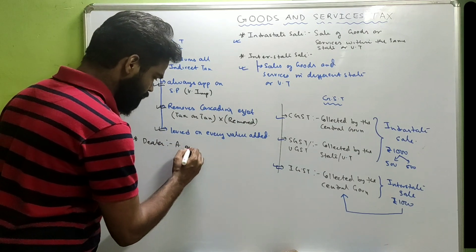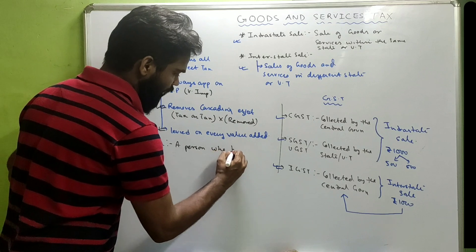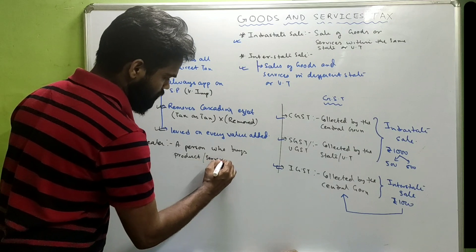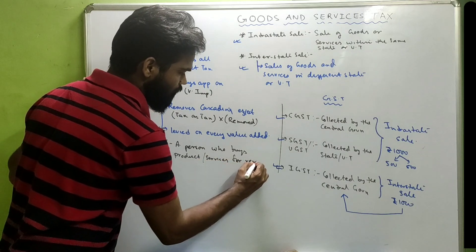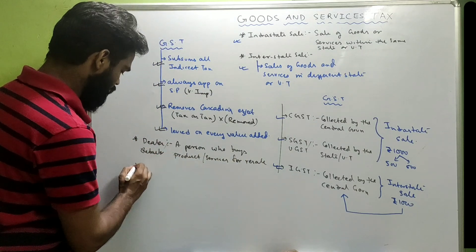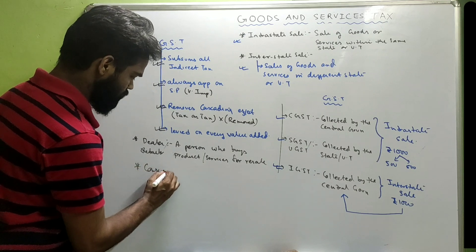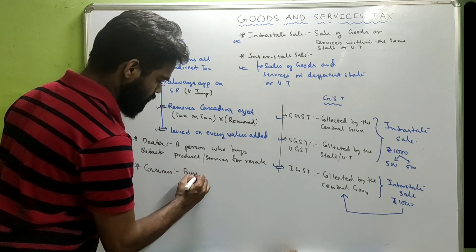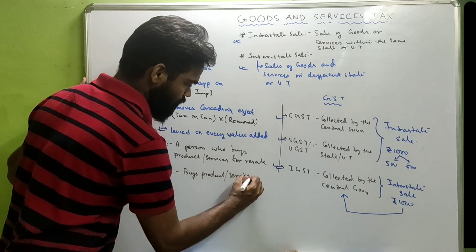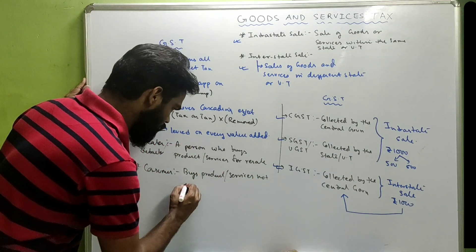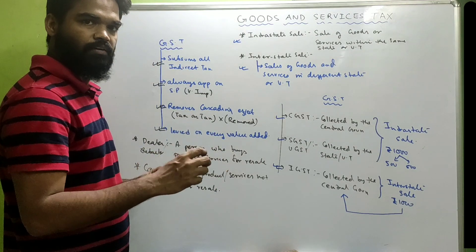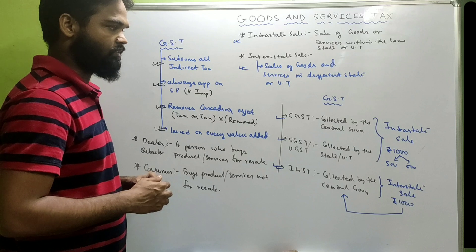Now let's understand a few important definitions. A dealer is a person who buys products or services for resale — we also call them a retailer. A consumer is a person who buys products or services not for resale but for individual use.